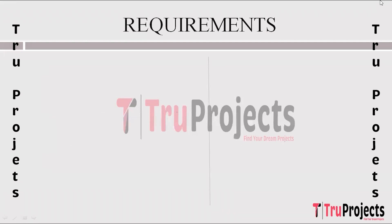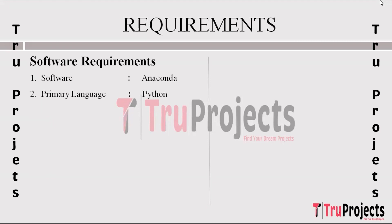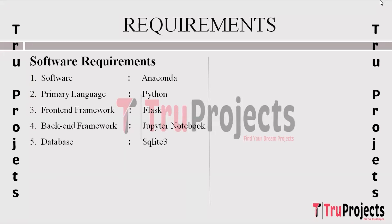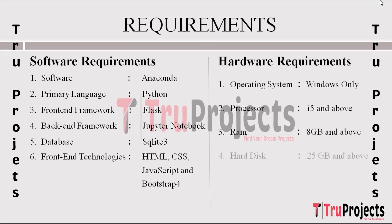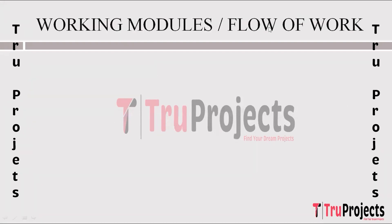The software requirements include Anaconda, Python as the primary language, Flask as the front-end framework, Jupyter Notebook as the back-end framework, SQLite3 as the database, and HTML, CSS, JavaScript, and Bootstrap 4 as front-end technologies. Hardware requirements include a Windows operating system, an i5 or above processor, 8GB or more RAM, and 25GB or more hard disk space.